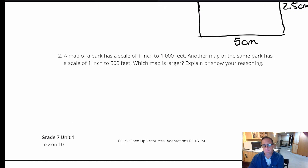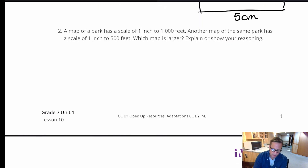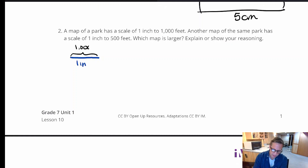Problem 2: a map of a park has a scale of one inch to 1,000 feet; another map of the same park has a scale of one inch to 500 feet. Which map is larger? To visualize this, think of a soccer field that's 1,000 feet long — that whole length is represented by one inch.